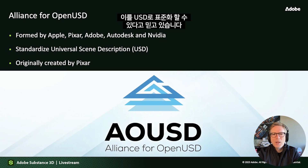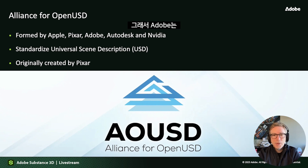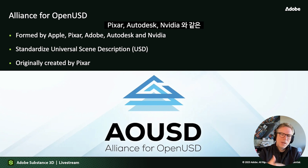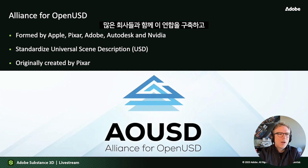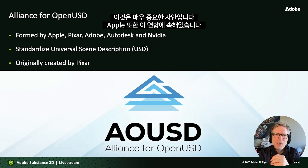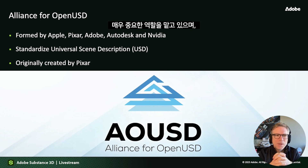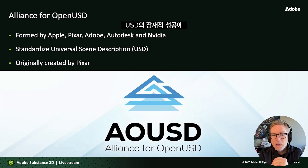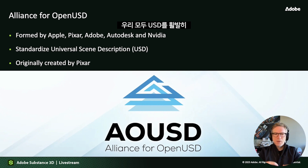With USD, we feel we're at a point where there is an opportunity for such a standard to emerge. This is why we participate in this alliance with a lot of other companies like Pixar, Autodesk, and Nvidia — to build this alliance and make sure that we standardize USD everywhere. Apple is also part of the alliance, which is a very important part of this working group and of the potential success for USD. So we're very bullish on USD and we're pushing it right now.